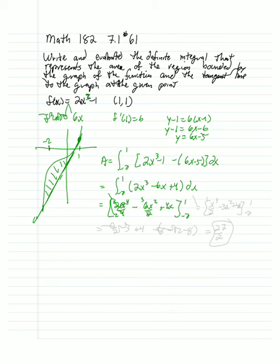Okay, and so what we really have is x to the fourth over 2 minus 3x squared plus 4x from negative 2 to 1.